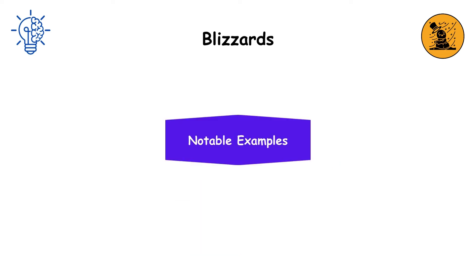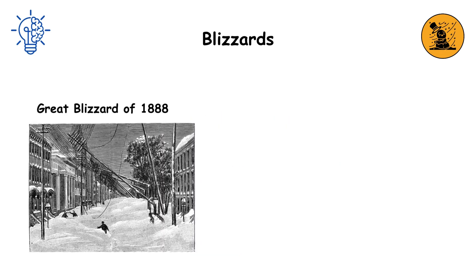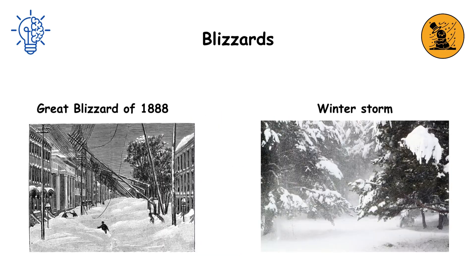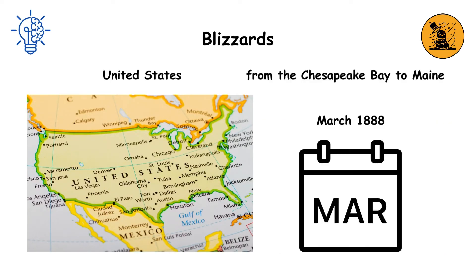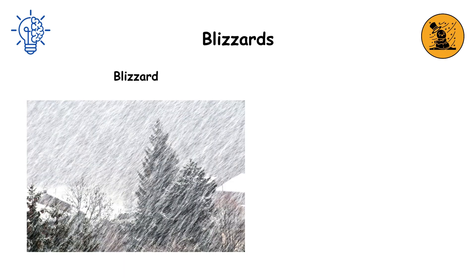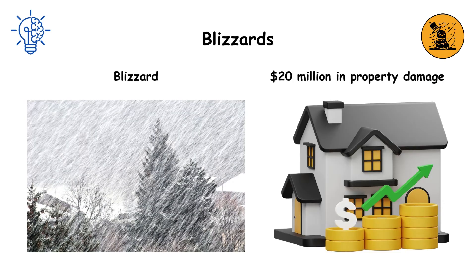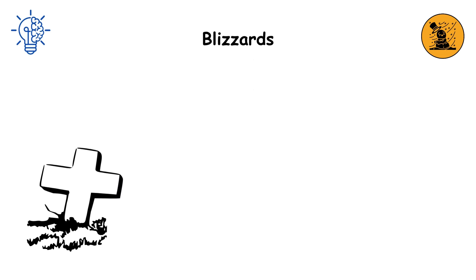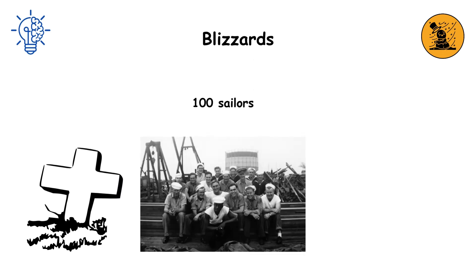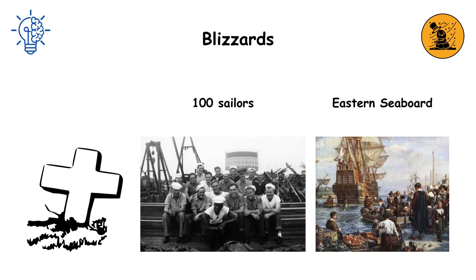Notable examples: The Great Blizzard of 1888 was a winter storm that pummeled the Atlantic coast of the United States from the Chesapeake Bay to Maine in March 1888. It caused more than $20 million in property damage in New York City alone and killed more than 400 people, including about 100 sailors, across the eastern seaboard.